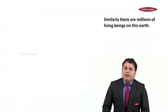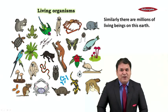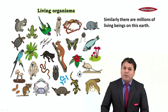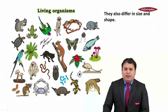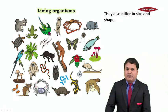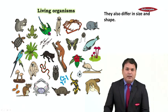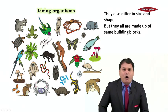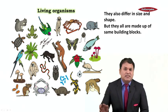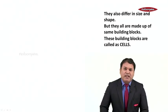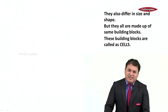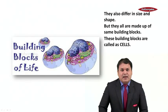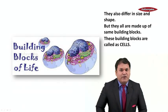Now similarly, there are millions of living organisms on this earth. We have so many plants, animals, and human beings around us. These living organisms also differ in size and shape — they are so very different from each other. But here also, they all are made up of the same building blocks, and these building blocks of living organisms are called cells.